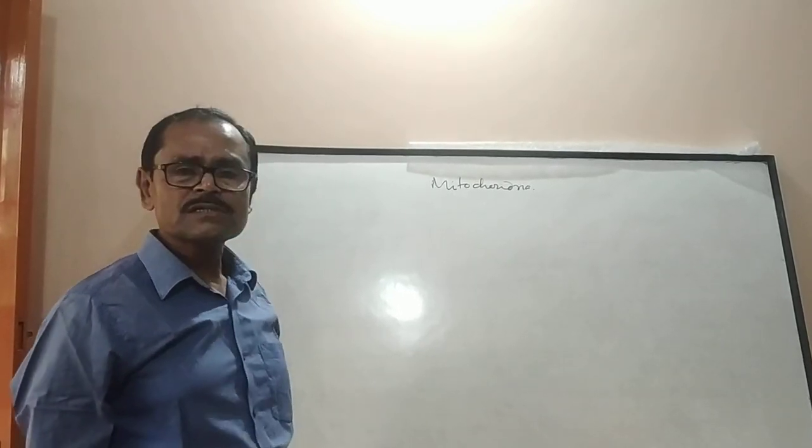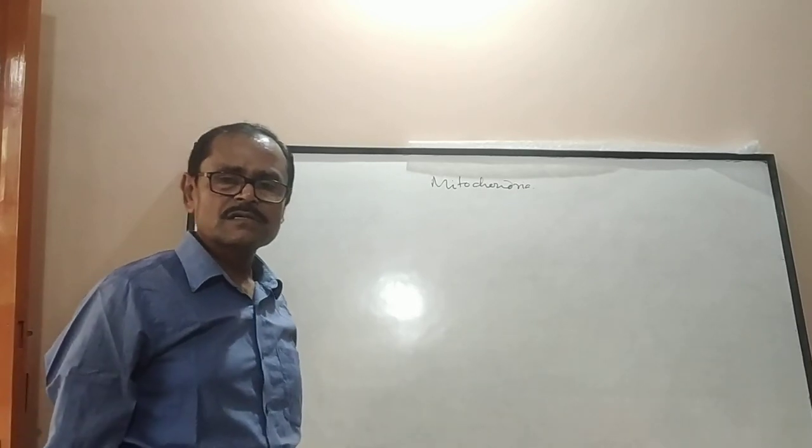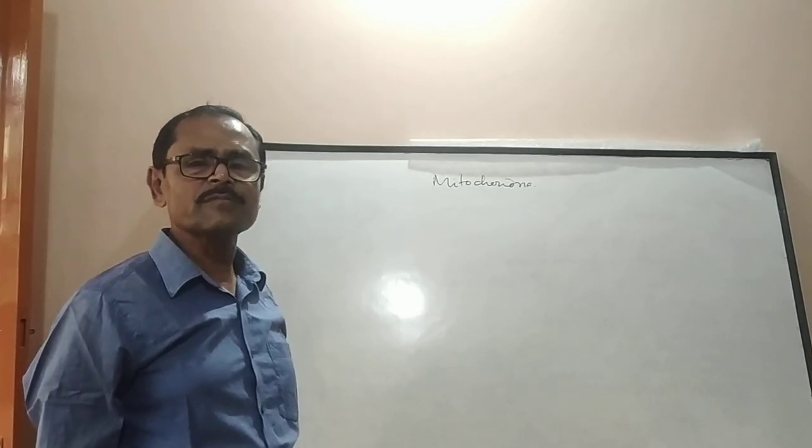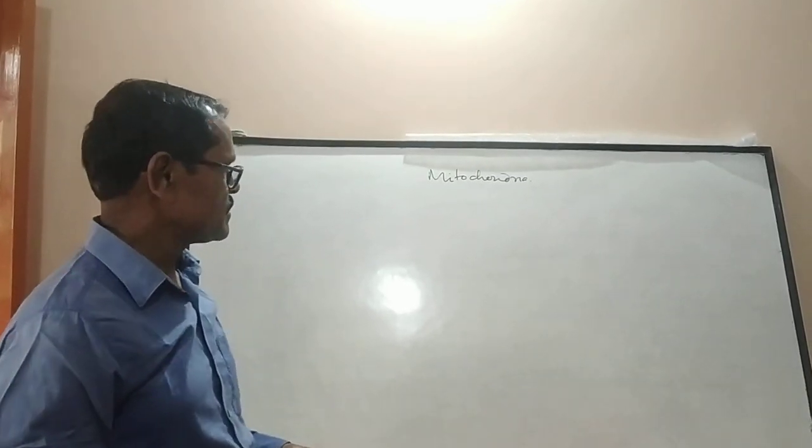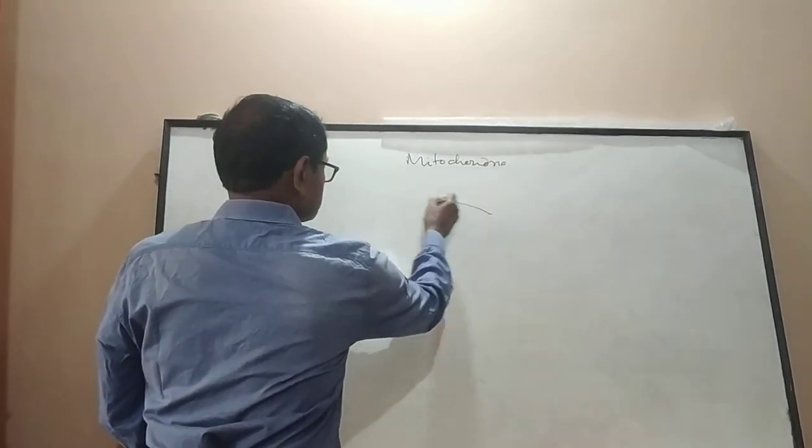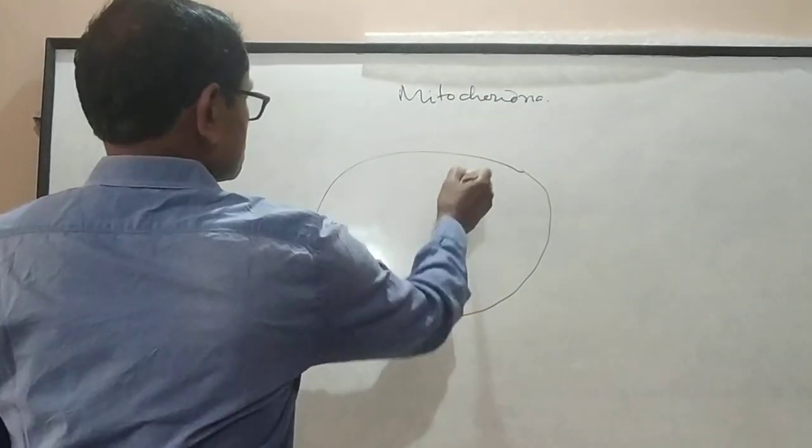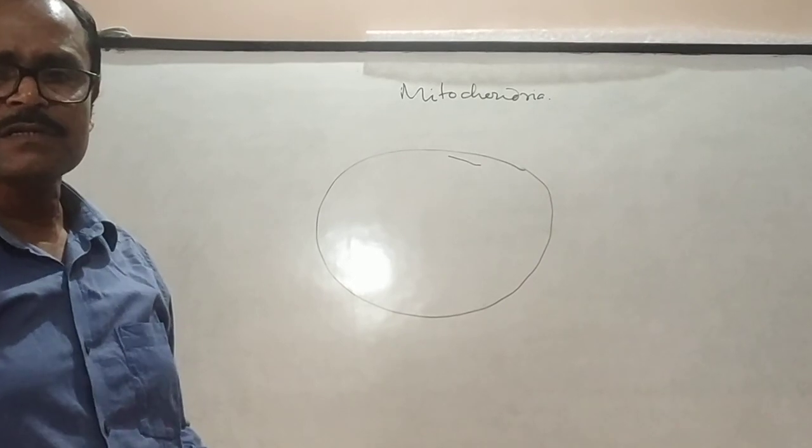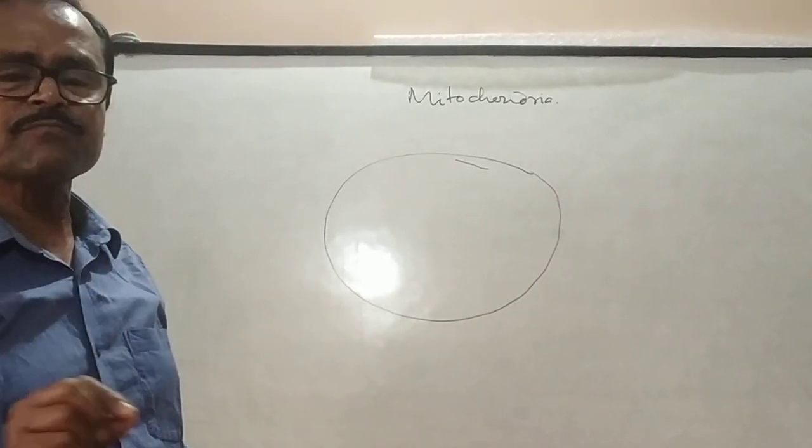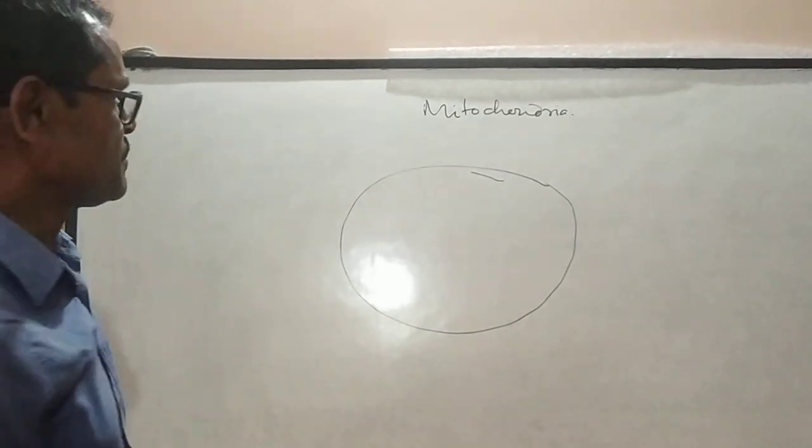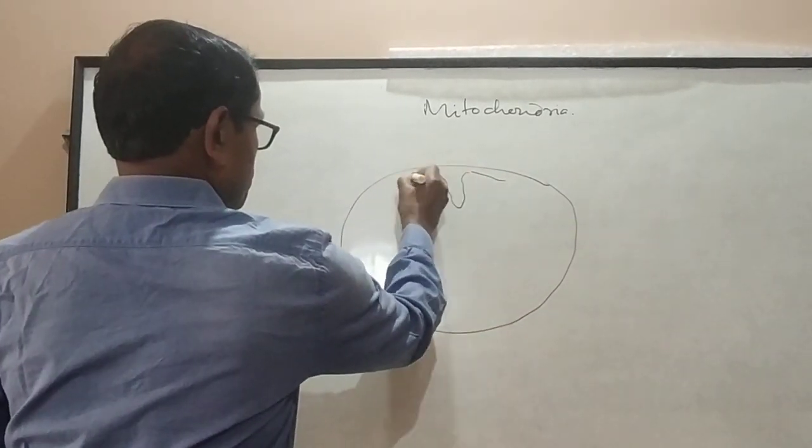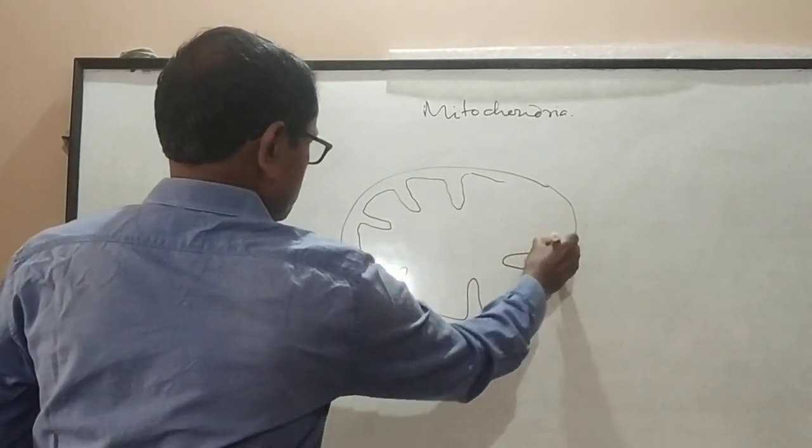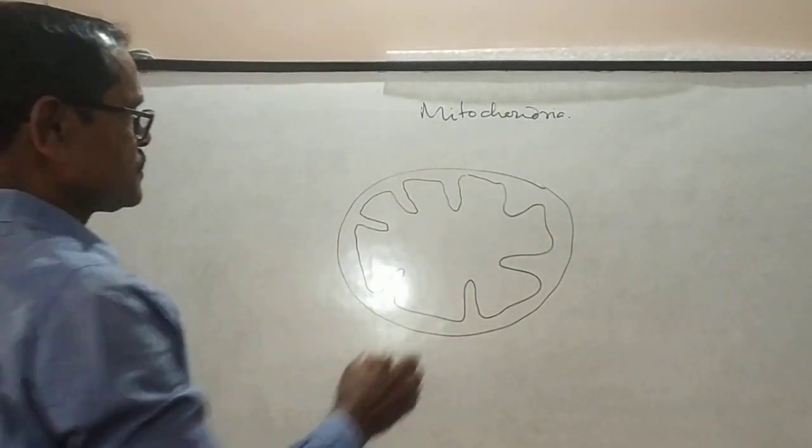It is one organelle having double membrane. The structure will be like that. That is the outer membrane, the inner membrane. And its inner membrane is folded into some finger-like projections which are known as cristae.